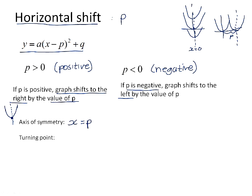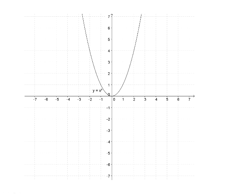In the same way, if we move the graph left and right and up and down, we also move the turning point. The x value of the turning point will be the p value, and the y value of the turning point will be the q value. Looking at the parent function y equals x squared, the graph has its turning point at the origin. We can see this from the equation, because it is y equals x minus 0 squared plus 0, so the p and q values give us the turning point of (0, 0).